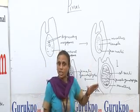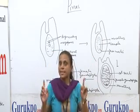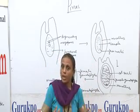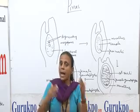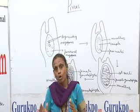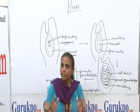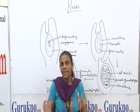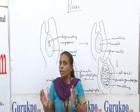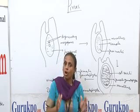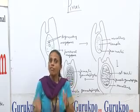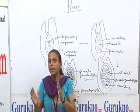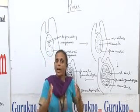Now I move towards the stem. The stem is cylindrical, erect, woody and on the stem arise monopodial branches. These branches are of two types: branches of unlimited growth or the long shoots, and branches of limited growth or the dwarf shoots.